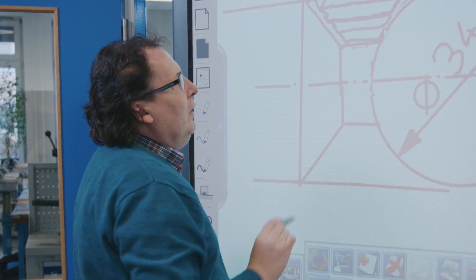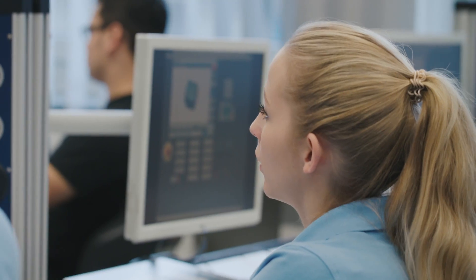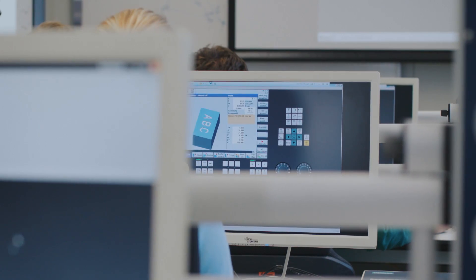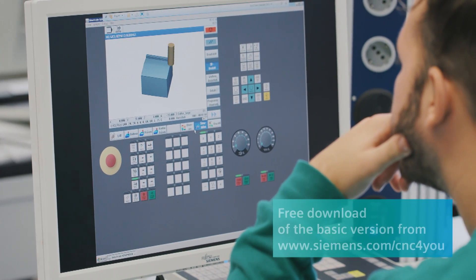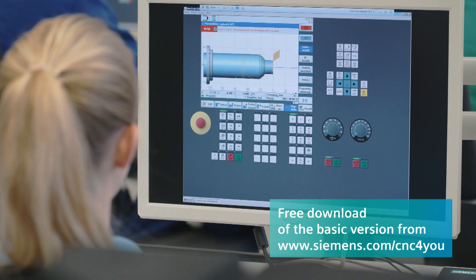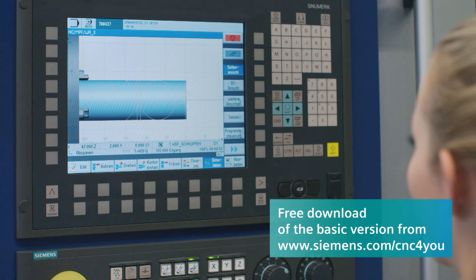They are tailored to meet the requirements stated by vocational schools and universities. They comprise the control-identical training software XenuTrain, which can be used as an offline programming workstation. XenuTrain is provided as a free basic version for training and can be downloaded from www.siemens.com/cnc4you.